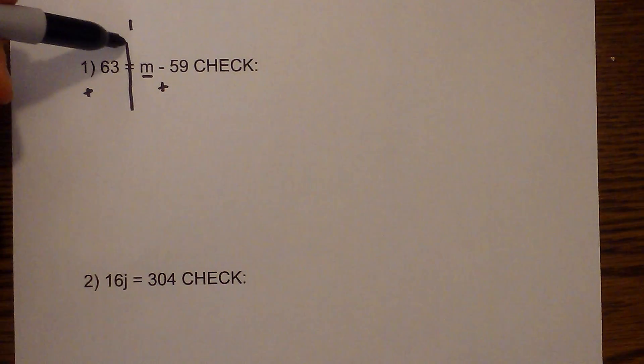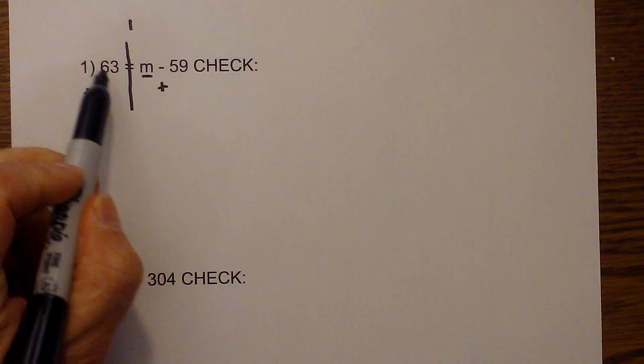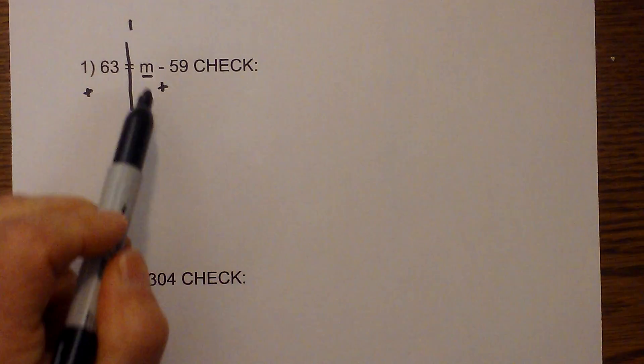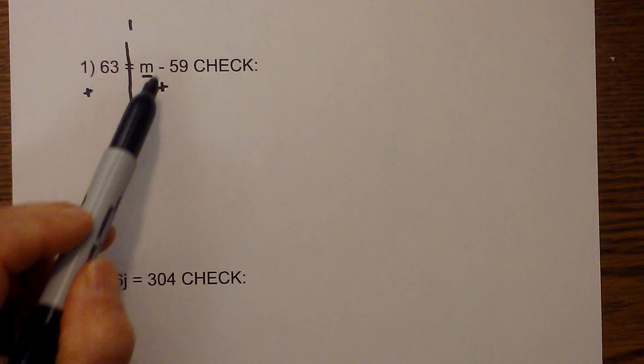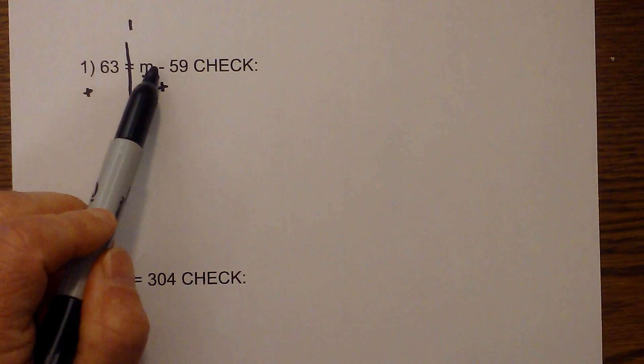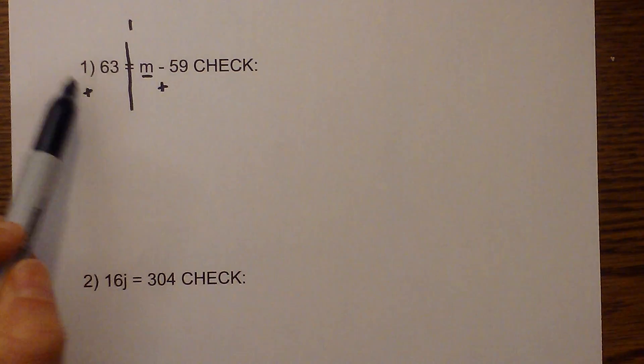Okay, so number one I've drawn a line down through the equal sign so you can see two sides. I've identified the variable which is m, and now I'm going to complete the inverse operation which is addition since this is subtraction.